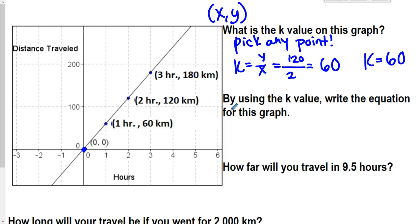By using the k value, write the equation. So remember, we know it's direct variation. So I'm going to put y equals kx. And instead of k, I'm just replacing k with 60. That's what I found before. This is literally the equation: y equals 60x. Whatever you find k, you just substitute it in.